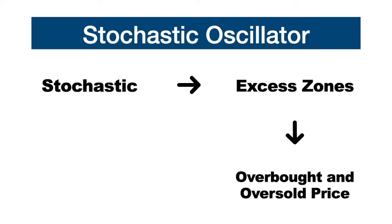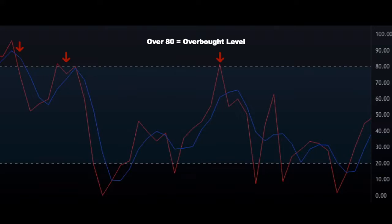The fundamental use of the stochastic is to identify areas of excess and to understand when the price is oversold or overbought. The overbought zone is identified when the stochastic fluctuates above the 80 level. Overbought zones give us signals to sell.